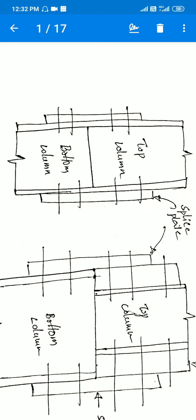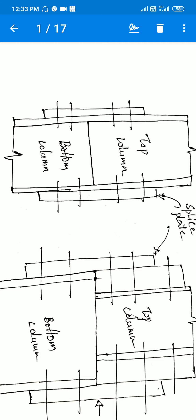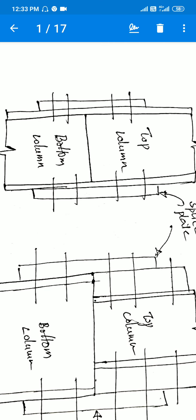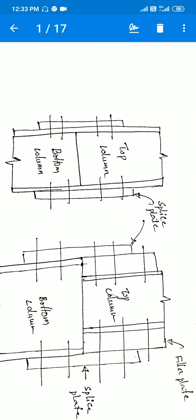Here you can see the splice plate is connected between two columns. We need to design the splice plate width, thickness, and length, which depends on the number of bolts. Both the bottom column and top column have the same dimensions, so we connect them at the flanges using splice plates. The number of bolts must always be an even number — you can't provide an odd number. For example, you must use four bolts, not three. This is Case 1, where the top and bottom columns are the same size.